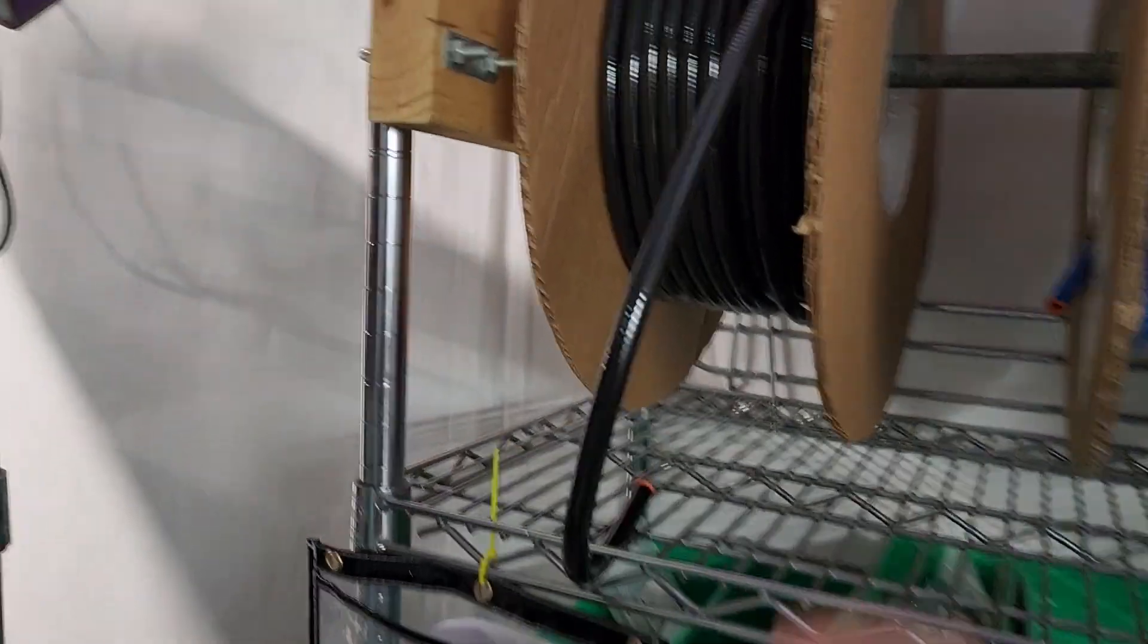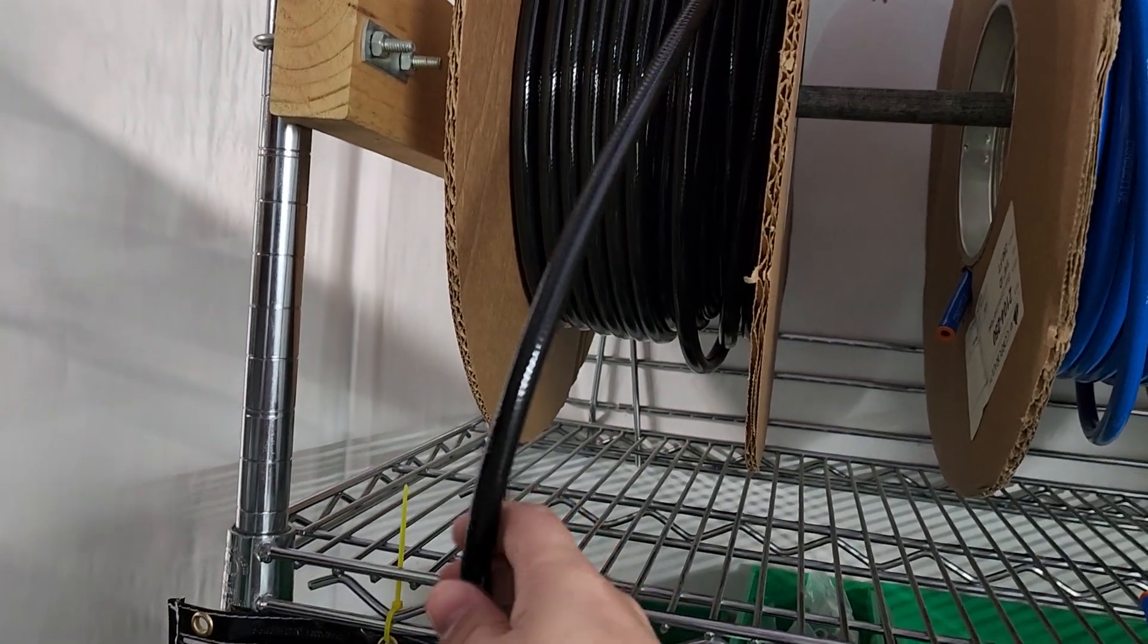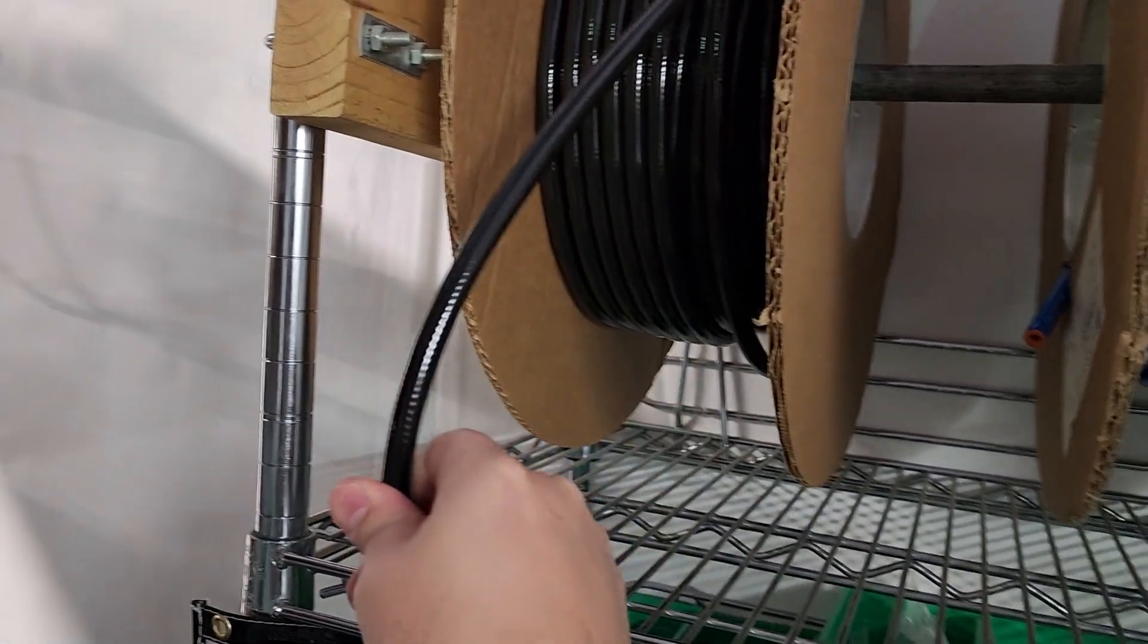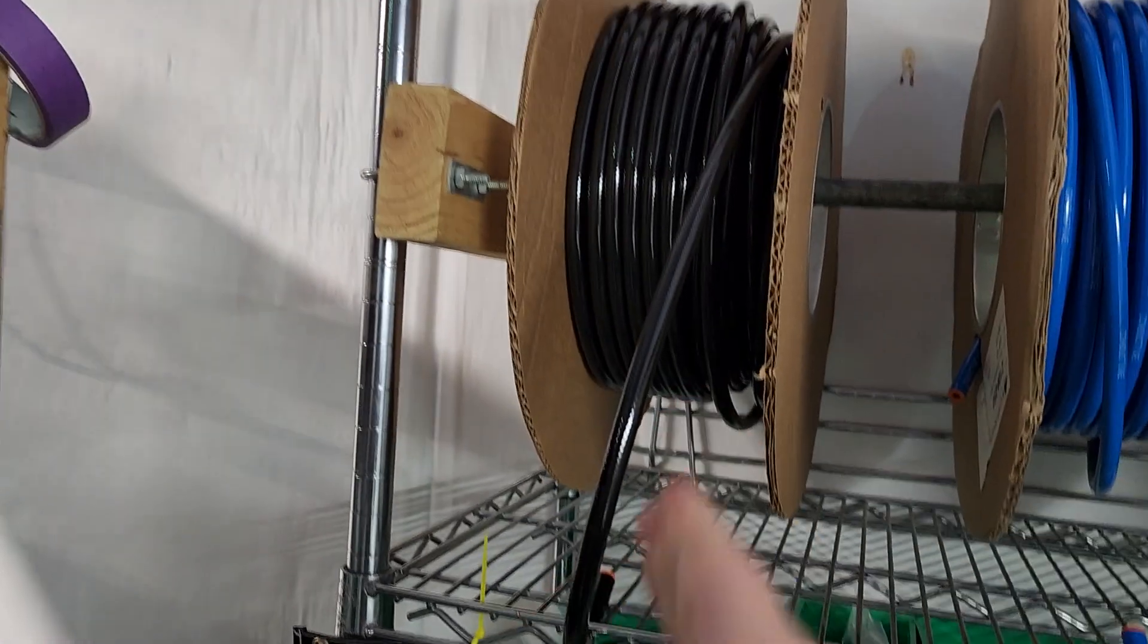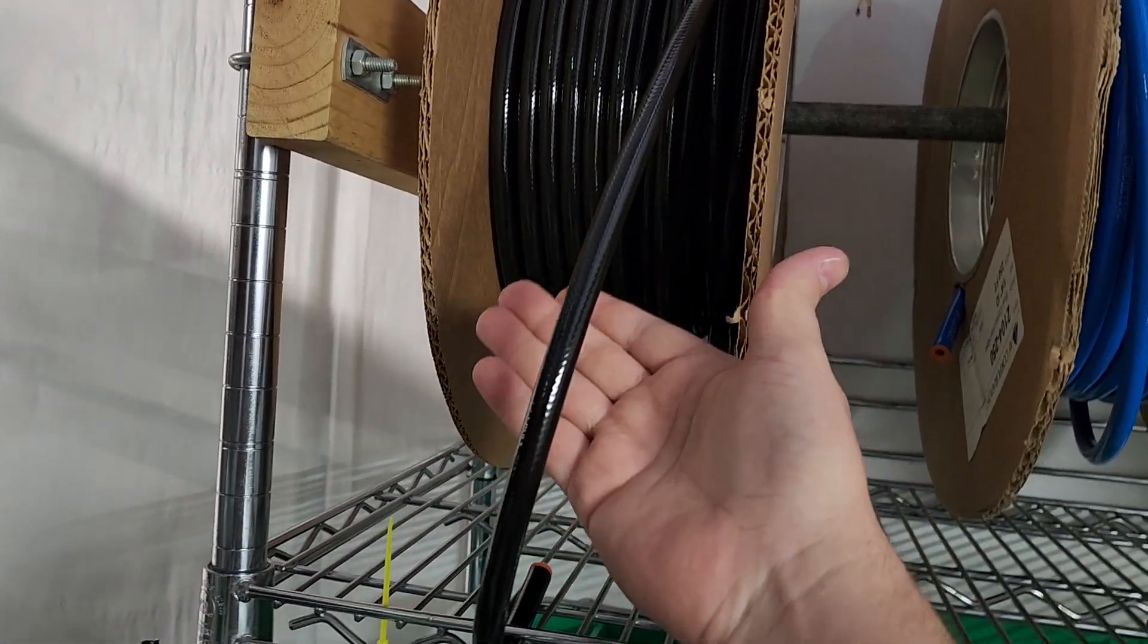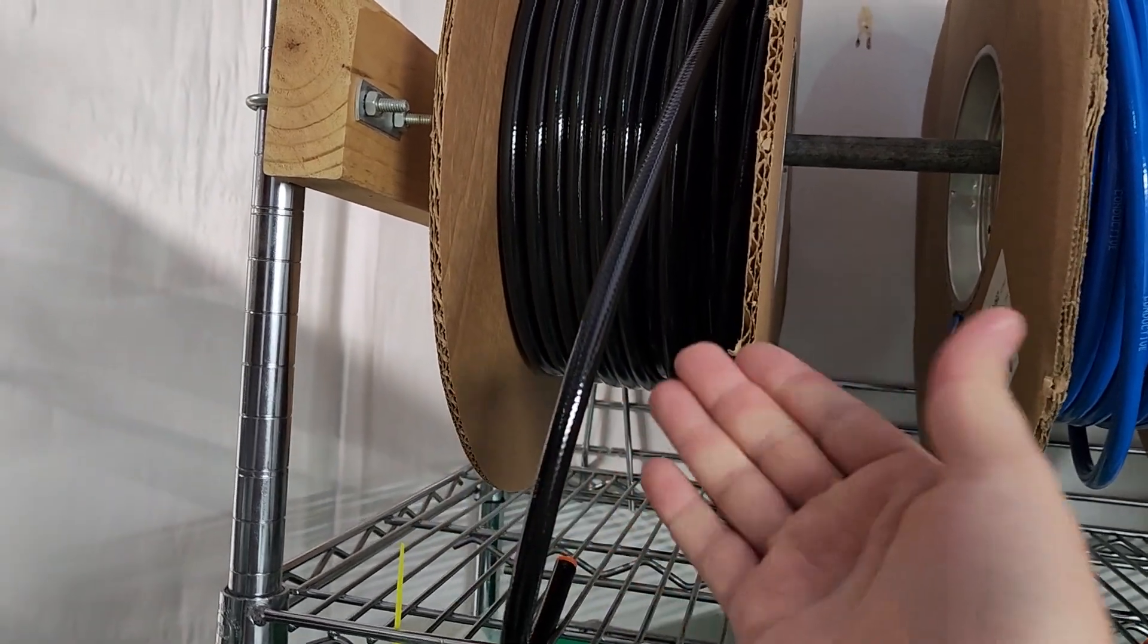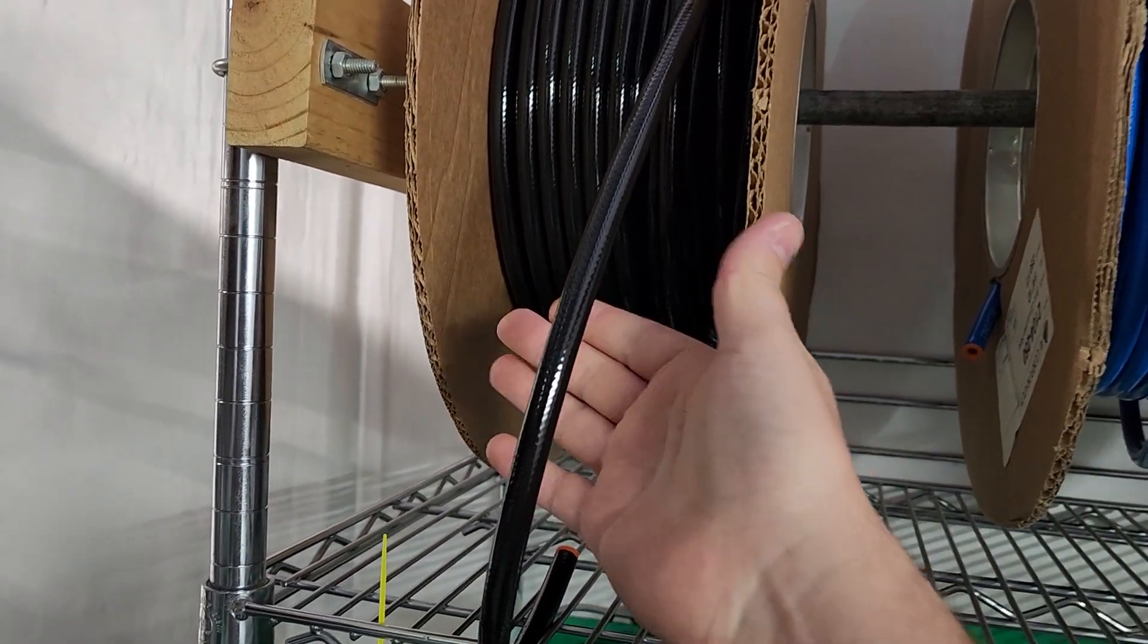Black is usually reserved for nitrogen. Nitrogen is usually used for powering instruments, especially for neurosurgery, because you can't use electricity around the brain. So often a lot of neuro instruments—saws and stuff like that, shavers—those instruments are going to be powered with nitrogen.